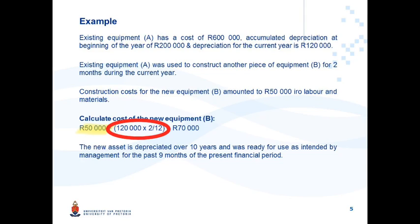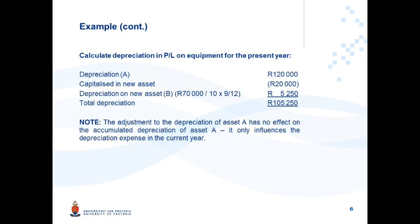New Asset B is depreciated over 10 years and was ready for use as intended by management for nine months of the current financial period. The depreciation recognized in profit or loss on Equipment A is 120,000 Rand, but 20,000 of that was capitalized to Asset B's cost price, so it is no longer in profit or loss. Depreciation on new Asset B is calculated as 70,000 Rand over 10 years for nine months, giving total depreciation in profit or loss of 5,250 Rand.